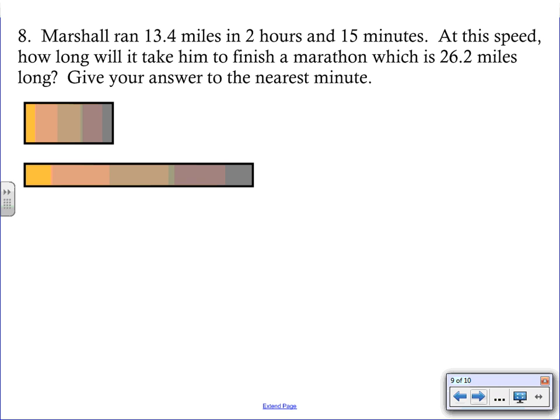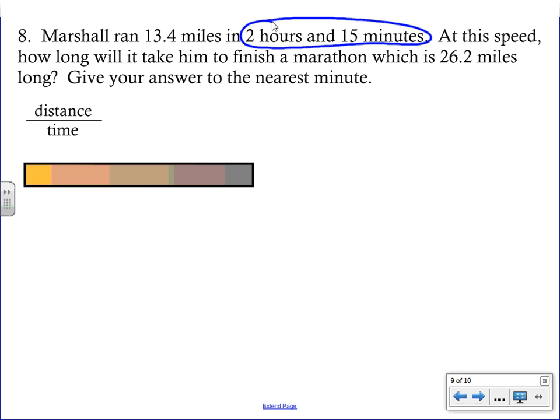Last problem here. Marshall ran 13.4 miles in 2 hours and 15 minutes. At this speed, how long will it take him to finish a marathon, which is 26.2 miles long? Give your answer to the nearest minute. Now, there's something a little bit tricky about this problem. It looks like we're comparing miles to time. And that is indeed true. But you are given the time in kind of a tricky way here. So I want you to circle that 2 hours and 15 minutes. I'll tell you, a common mistake is students are going to call that 2.15 hours, which is not the case because there are not 100 minutes in an hour.